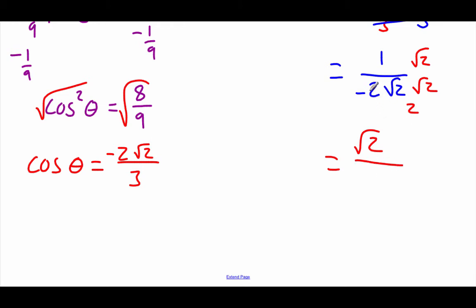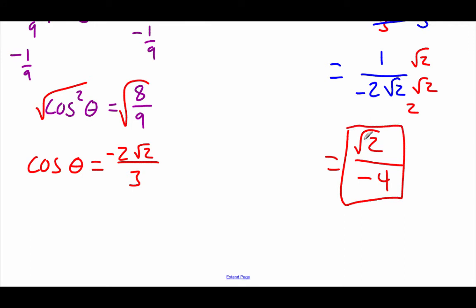On bottom, √2 times √2 is just 2, but we've got this negative 2 out in front, so negative 2 times 2 is going to be negative 4. So there's our tangent value: √2 over negative 4. It's a second quadrant angle, and tangents should be negative in the second quadrant. This one is, so we're good to go.